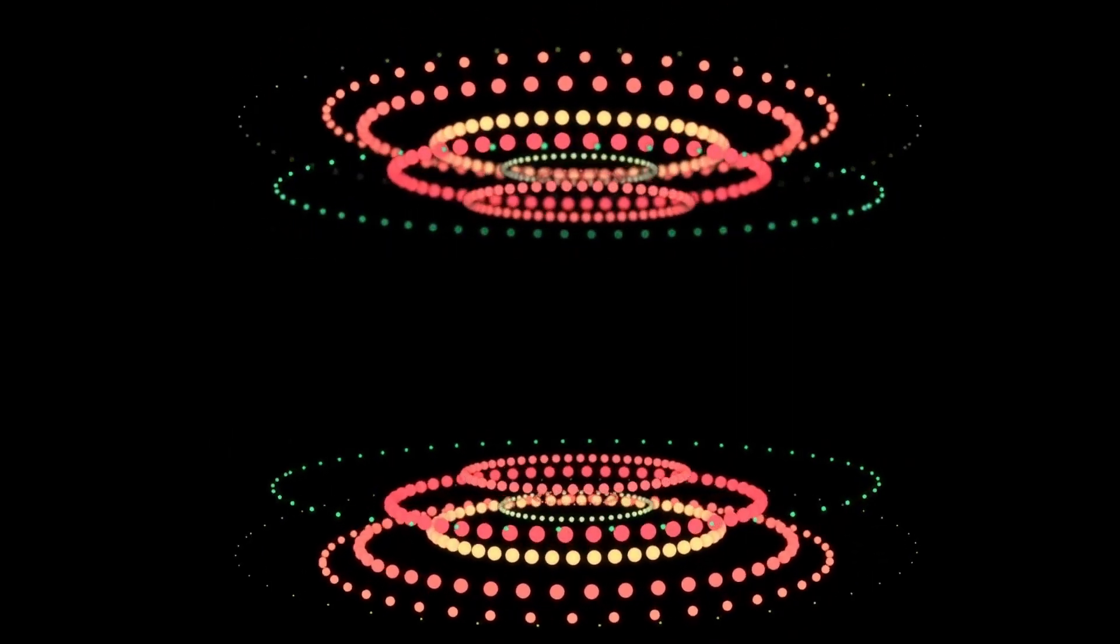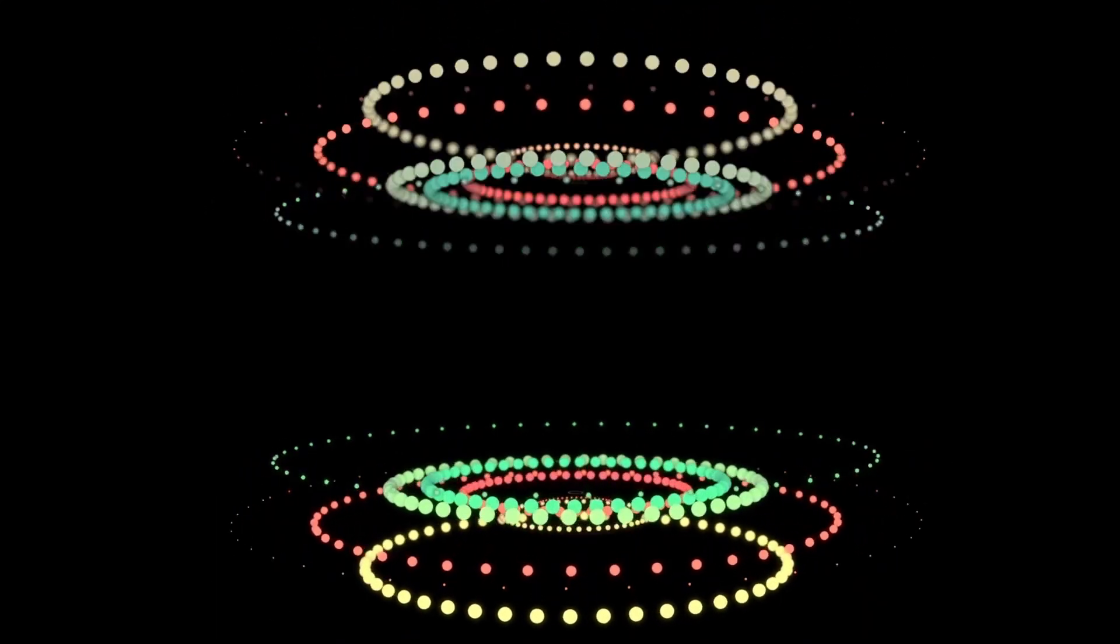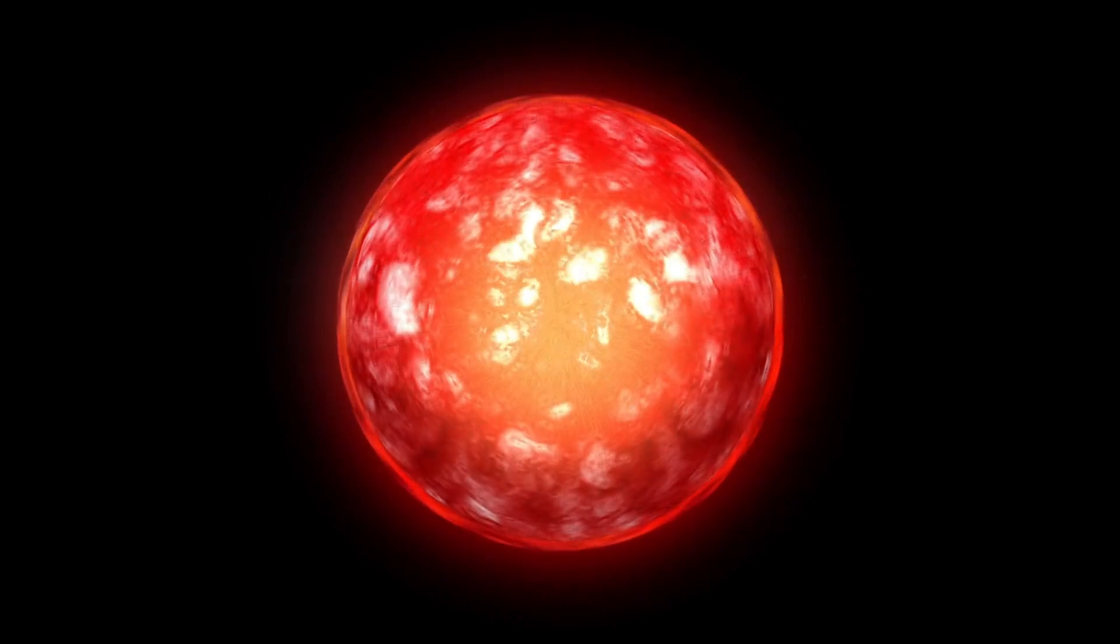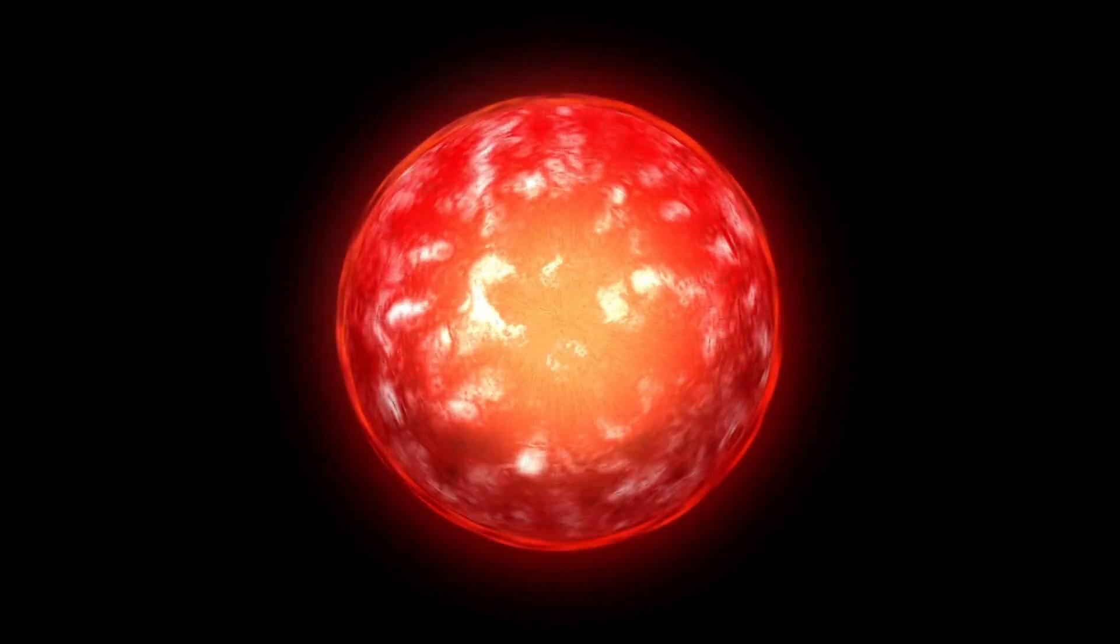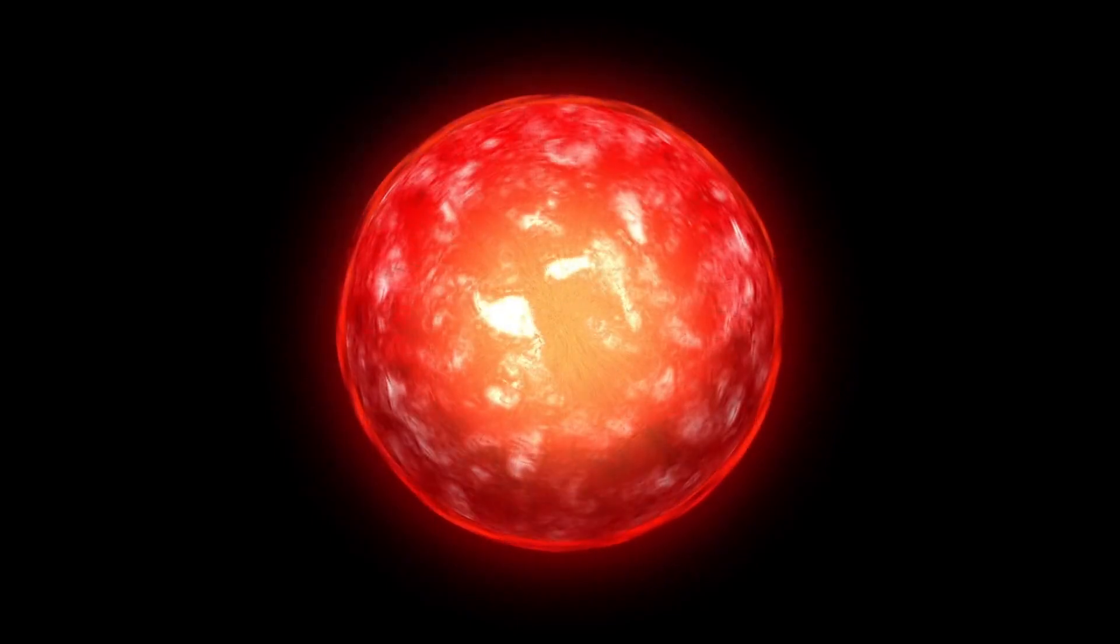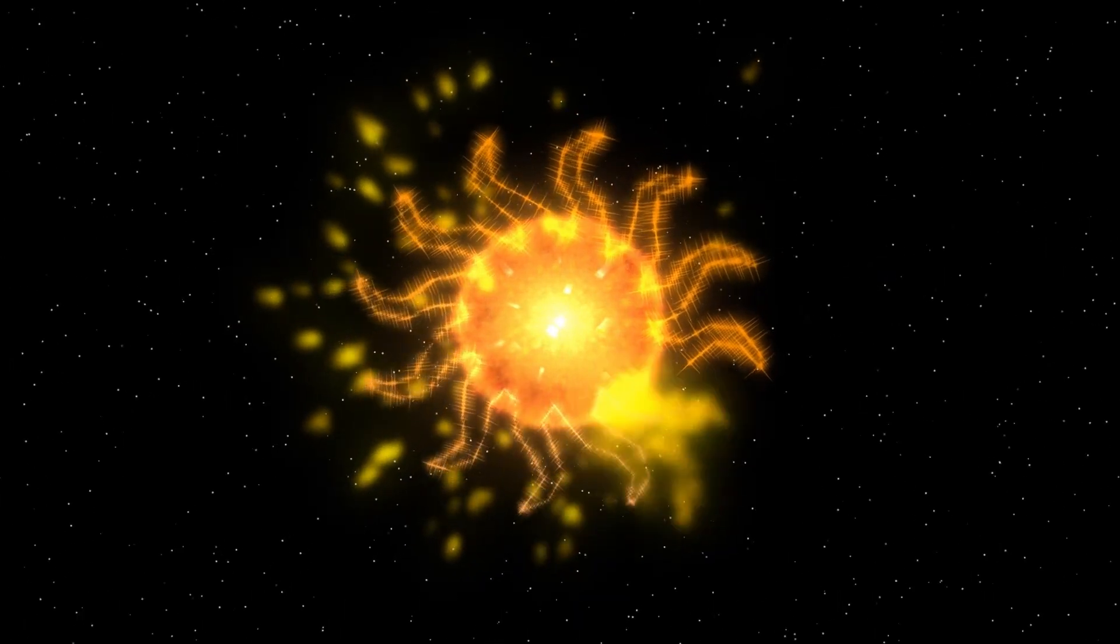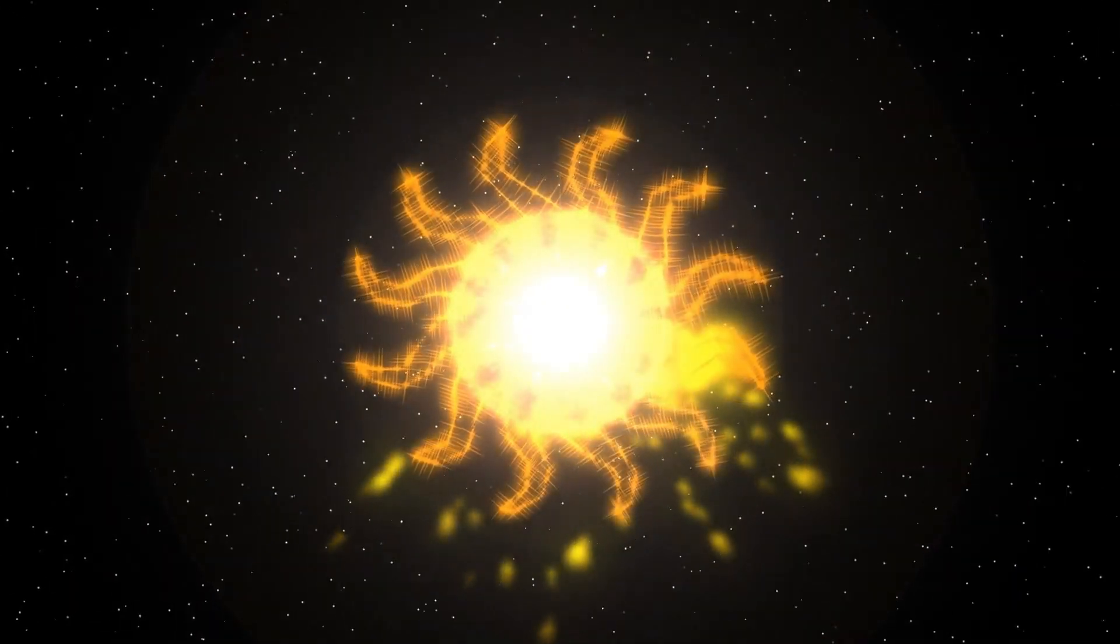One intriguing process within the star is stellar convection, where energy generated in the core rises toward the surface. This movement creates convection currents that transport energy outward, balancing the star's internal processes with its external luminosity. These currents also cause variations in brightness, manifesting as the pulsations observed from Earth.